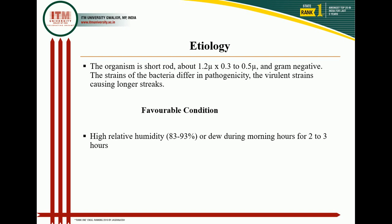Etiology of bacterial leaf streak: the organism is a short rod-shaped bacterium about 1.2 microns by 0.3 to 0.5 microns, and it is gram-negative. Mostly 85 to 90 percent of disease-causing bacteria are gram-negative. Only 5 to 10 percent are gram-positive bacteria that cause disease to the plant. The pathogen is a rod-shaped, gram-negative, aerobic bacterium. Strains differ in pathogenicity; virulent strains cause longer streaks and less virulent strains cause shorter streaks.